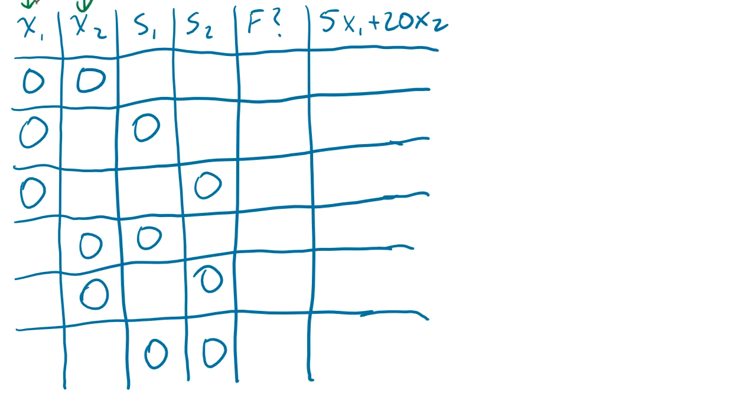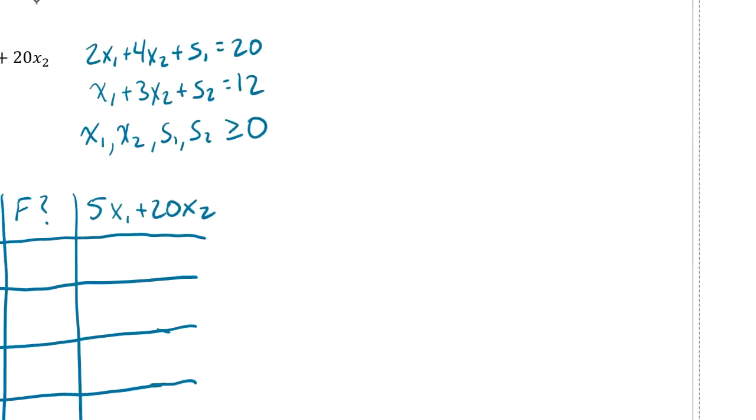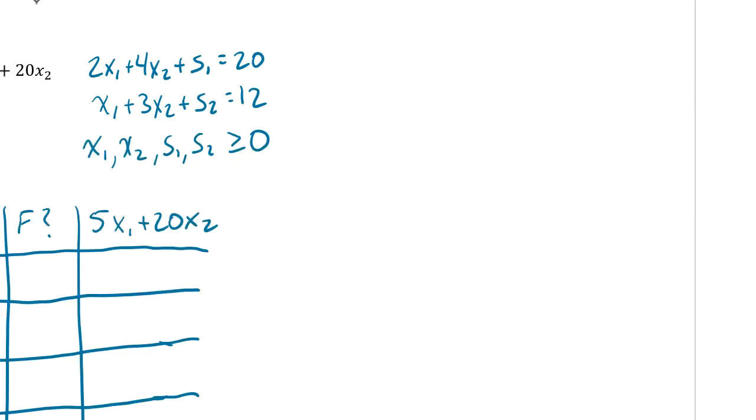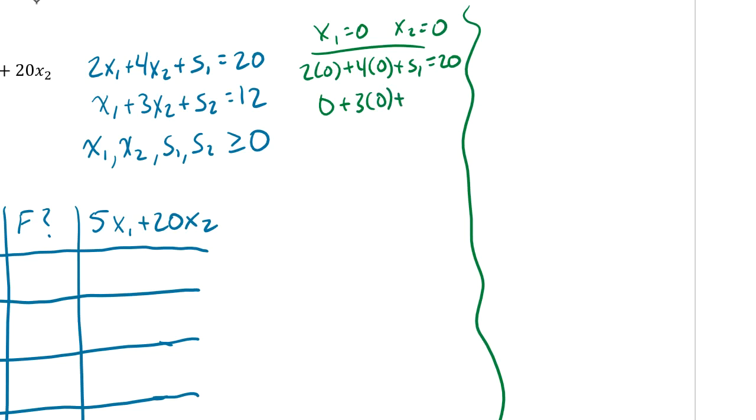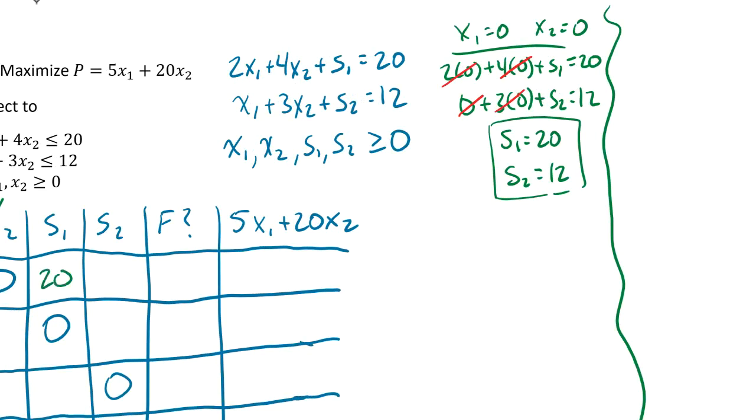All right, so let's go ahead and get started. I'm going to start off with x1 and x2. So x1 equals 0, x2 equals 0. If we plug those in we're going to get 2 times 0 plus 4 times 0 plus s1 equals 20, then 0 plus 3 times 0 plus s2 equals 12. So we can get rid of all those zeros. We have s1 equals 20, s2 equals 12. Nice and easy, so we already got our first two: 20 and 12.